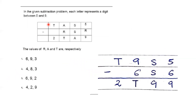This is a subtraction problem where we need to find missing digits r and t. For the column where 5 minus r gives 9: we need a borrow, so 15 minus r = 9, therefore r = 6. With r = 6 placed in its positions, options two and four are eliminated.